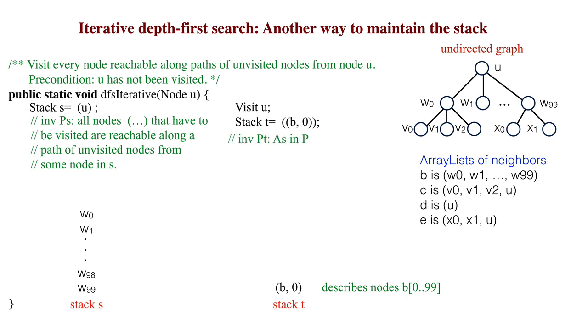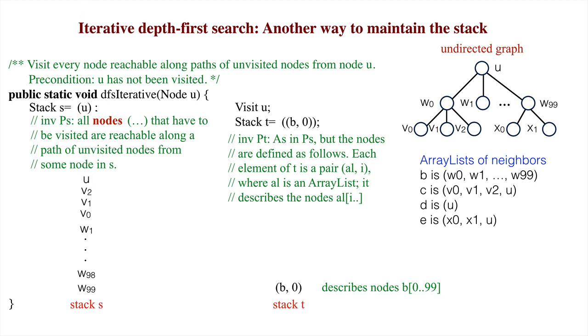We show one iteration of the main loop, using the two different stacks. In the original implementation, W0 is popped from the stack. It is visited, and V0, V1, V2, and U are pushed onto the stack.